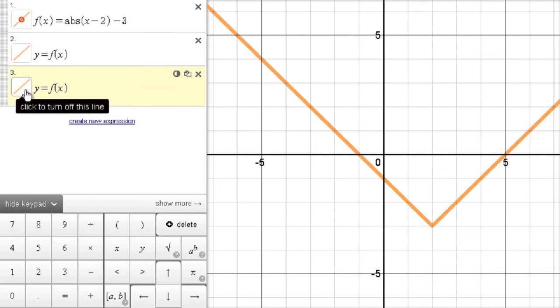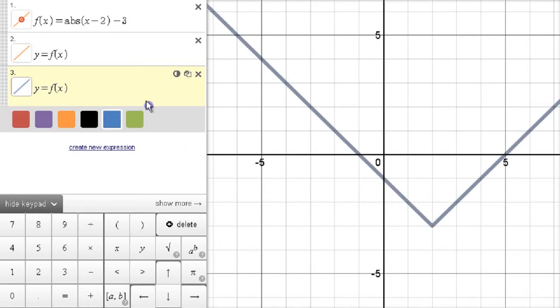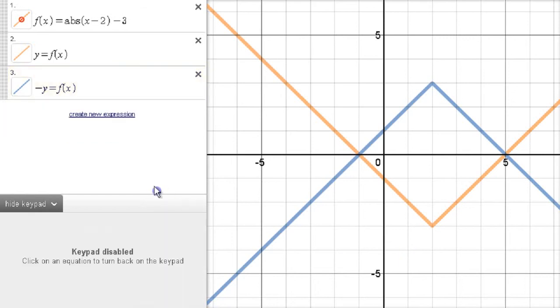Now, we're going to see what happens here. We'll make this a different color so we can see what's happening. We'll put blue. Now what we're doing is we're putting negative y equals f of x. Now that looks to me like we've got another kind of reflection like we did before, except for this one is not a horizontal reflection. This one's a vertical reflection up and down.